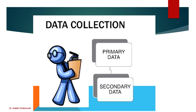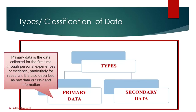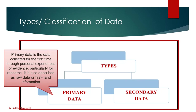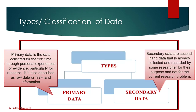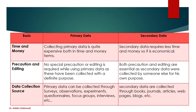We covered data collection — primary and secondary data. Primary data is first-hand information collected for the first time. Secondary data is information already collected by somebody else for some other purpose, and we are re-using it. We also discussed some differences between these two in the last video.